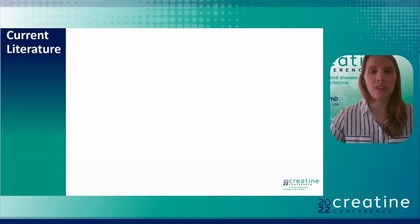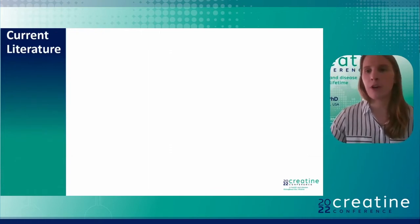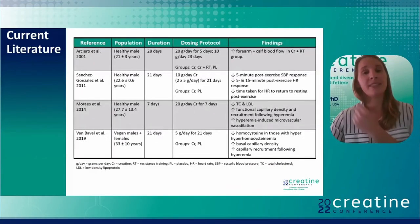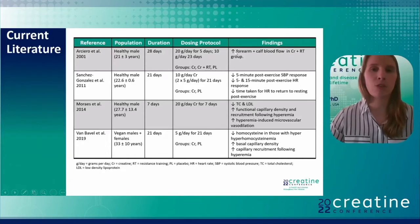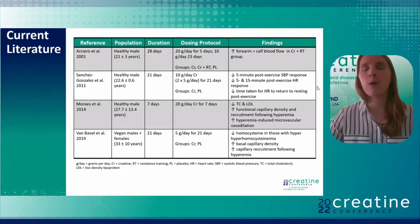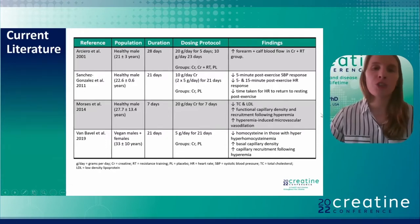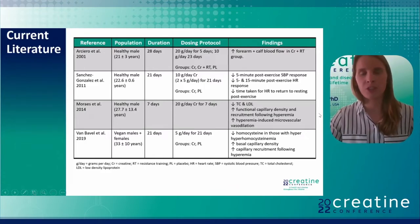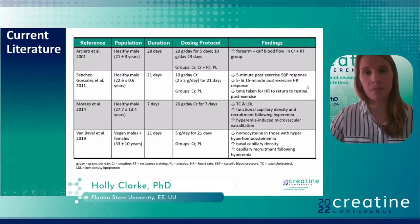We know creatine is present within the vasculature, but who has actually looked at creatine and its possible influences on vascular health in humans? In my review of literature, we found very few studies. RCR in 2001 found that the group taking creatine with resistance training had an increase in forearm and calf blood flow. Sanchez-Gonzalez in 2011 found that following creatine supplementation there was a decrease in systolic blood pressure response to exercise, a significant decrease in heart rate response to exercise, and a significant decrease in the time taken for heart rate to return to resting levels.